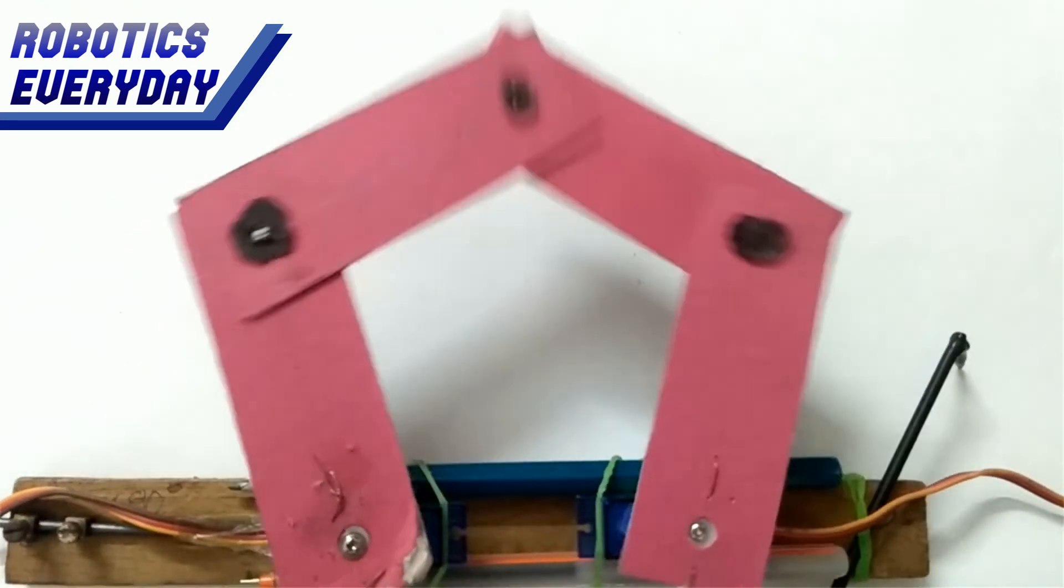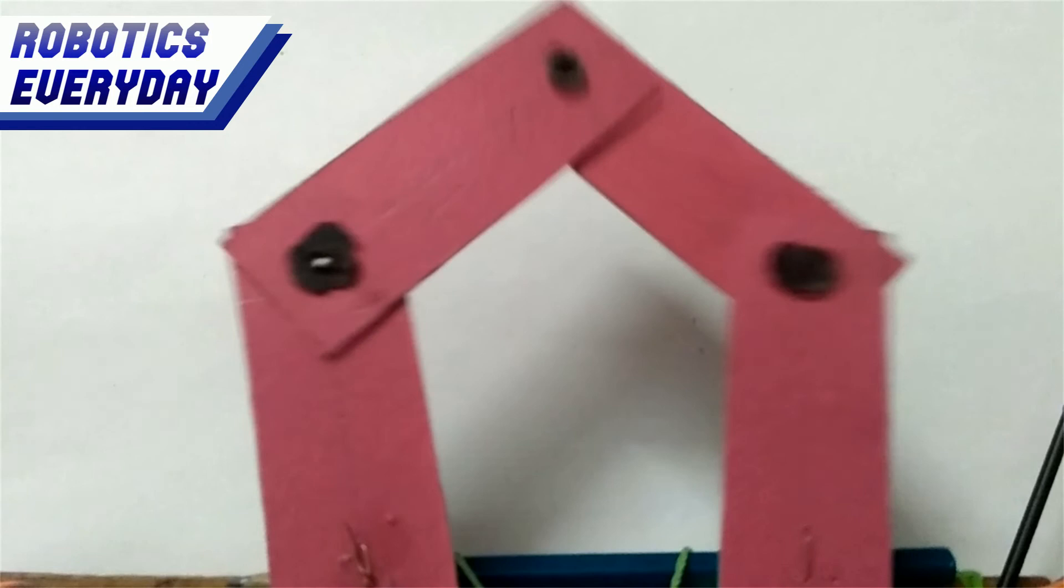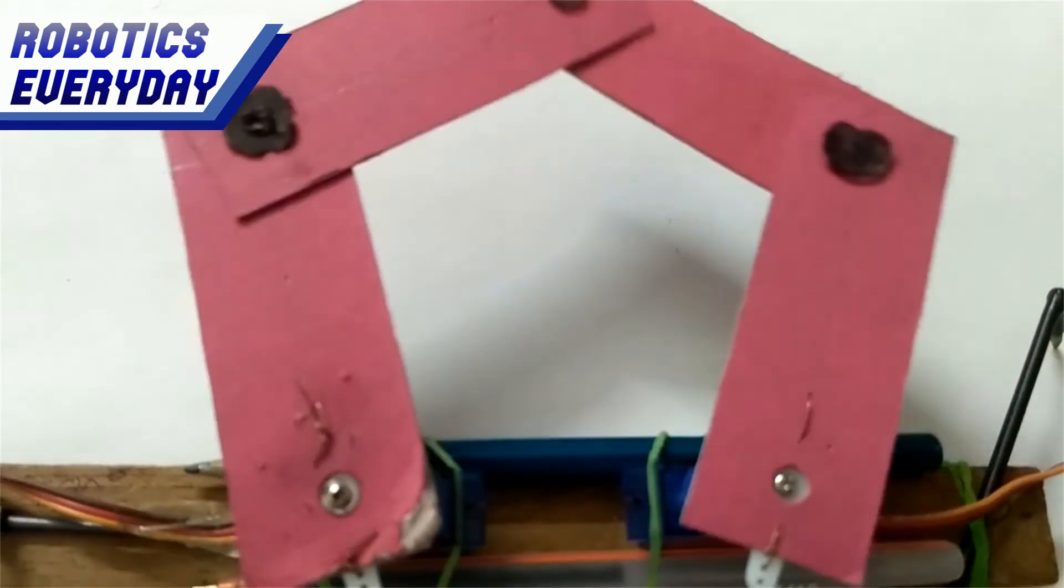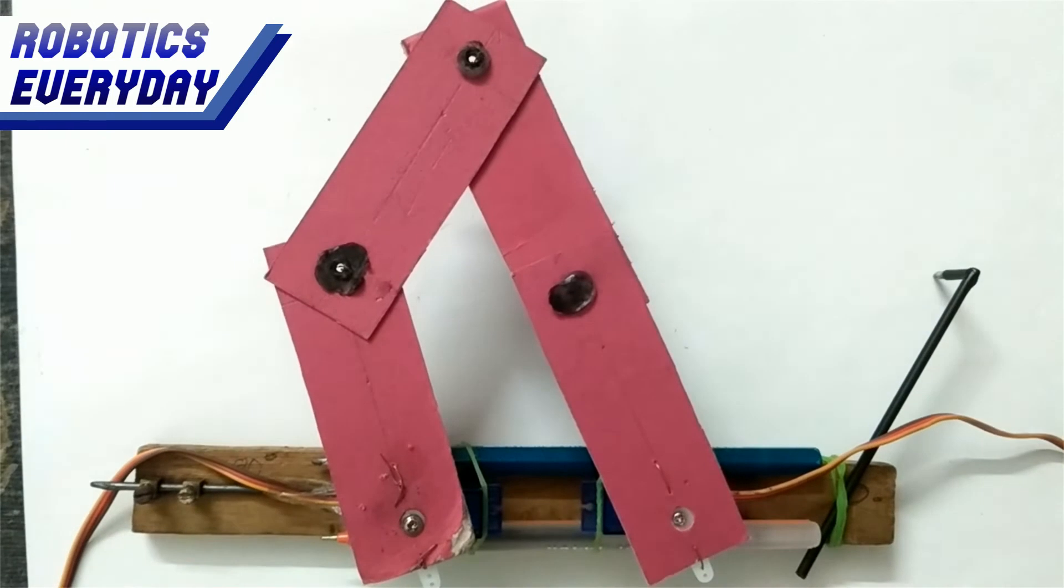The joint between those links is the point that will trace the pattern required. The brain of this system is an Mega328P microcontroller from Atmel. This IC is mounted on Arduino Uno R3 prototyping board.